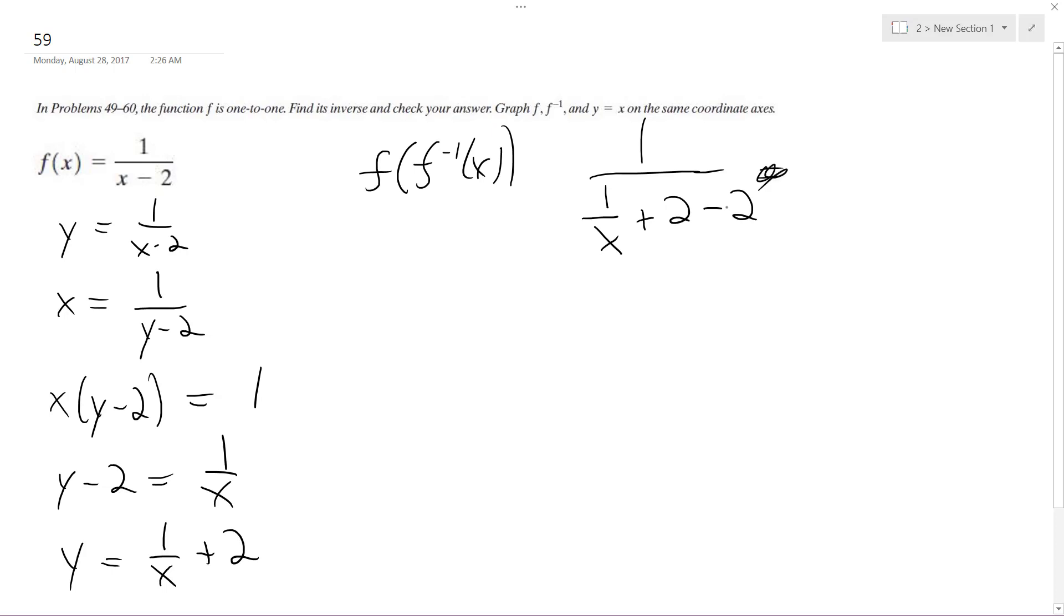Hold on, the 2's cancel out, and then you have 1 over 1 over x, which is the same thing as 1 times x over 1. And this becomes x, so that proves that.